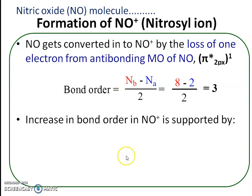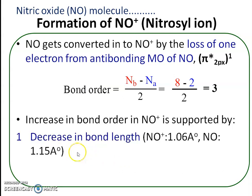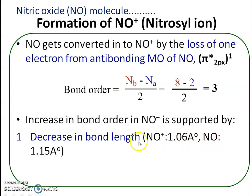The increase in bond order in the nitrosyl ion is supported by two important facts. First, there is a decrease in bond length. Bond order and bond length have an inverse relationship — greater bond order means lesser bond length. In the nitrosyl ion, as bond order increases, bond length decreases. The bond length of the nitrosyl ion is 1.06 Å, while that of nitric oxide is 1.15 Å. This decrease in bond length supports a bond order of 3 for NO⁺ and 2.5 for NO.